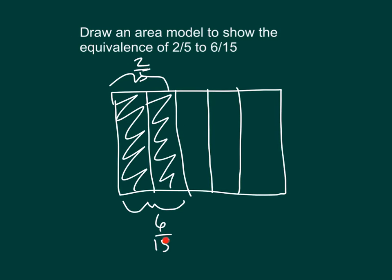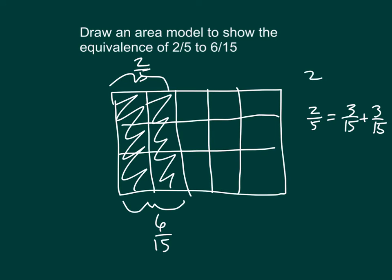How do we get from fifths to 6 fifteenths? What do we have to do? We draw how many horizontal lines? By drawing 2 horizontal lines, we've now divided this into fifteenths — 1, 2, 3, 4, 5, 6 fifteenths. We could look at this as 3 fifteenths plus 3 fifteenths to equal 2 fifths. Remember, 2 fifths equals 1 fifth plus 1 fifth, which is the same as 3 fifteenths and 3 fifteenths. Now we know that 2 fifths does equal 6 fifteenths.